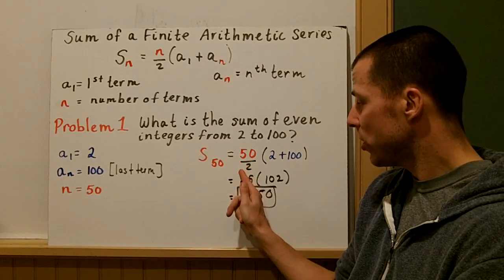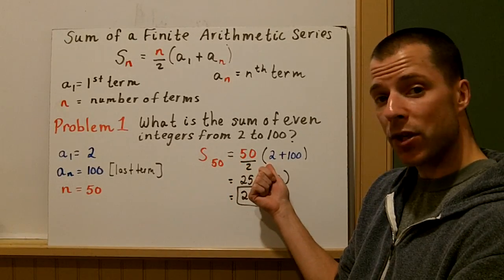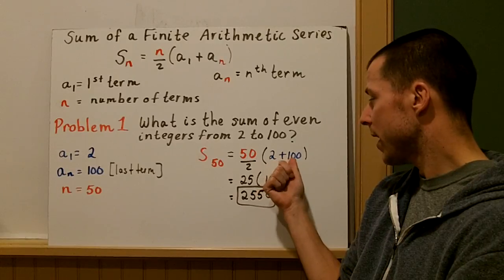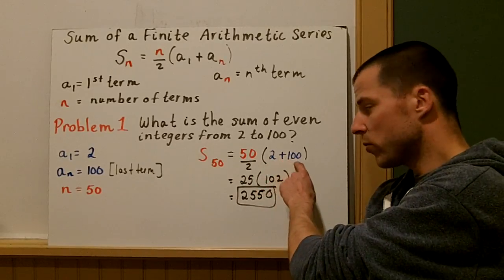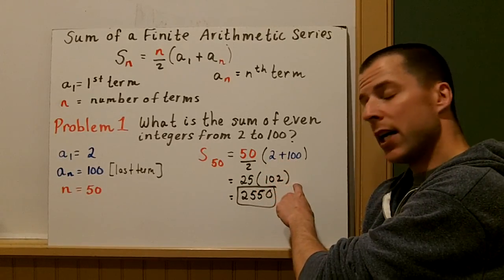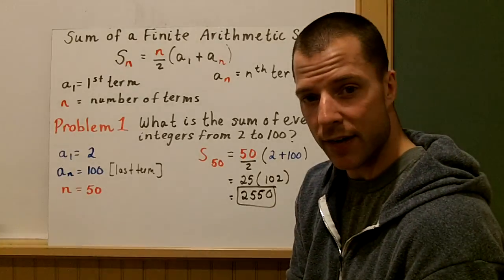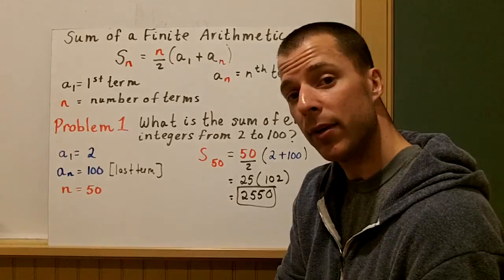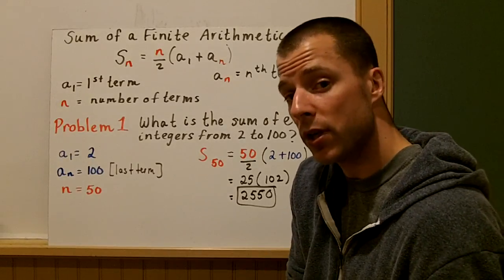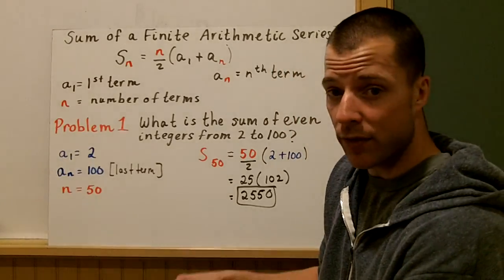So n is 50 divided by 2 times the quantity first term plus a_n, 2 plus 100. Simplifying, we get 25 times 102, which is 2,550. So the sum of even integers from 2 to 100 is 2,550.